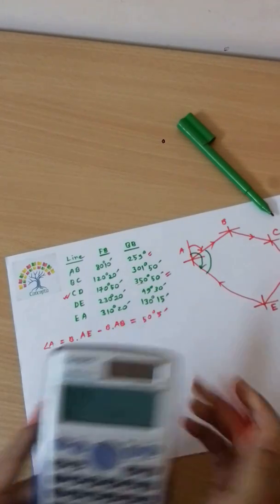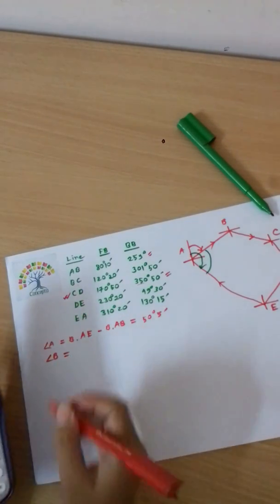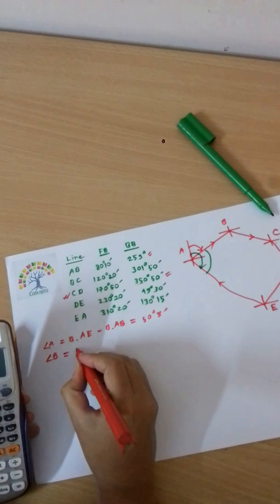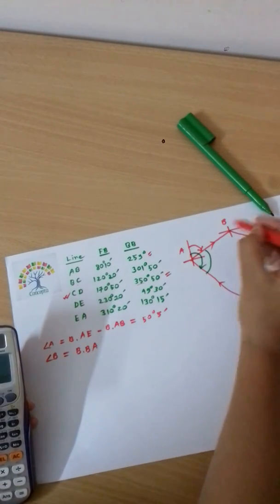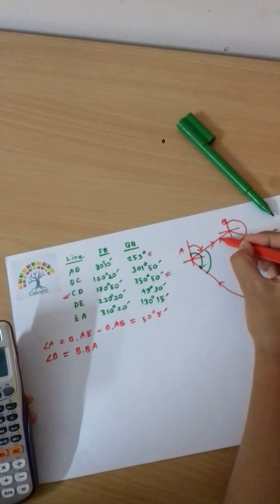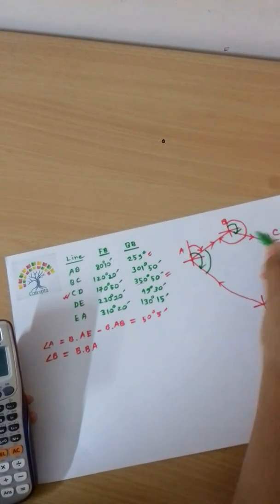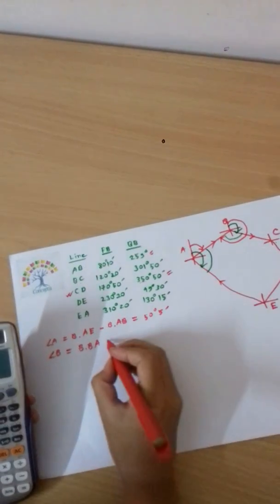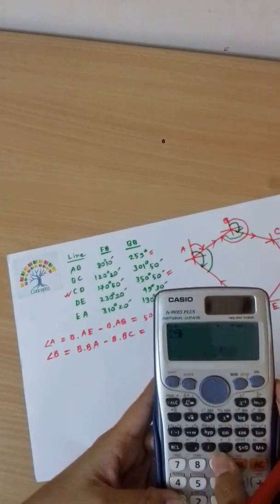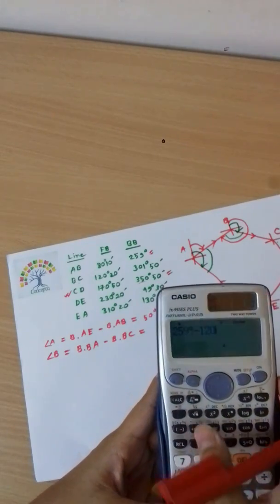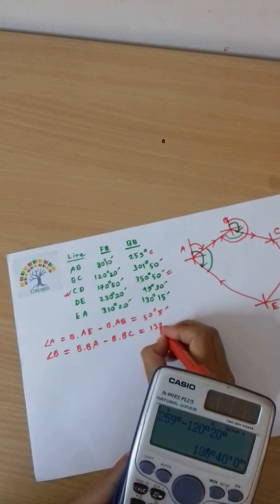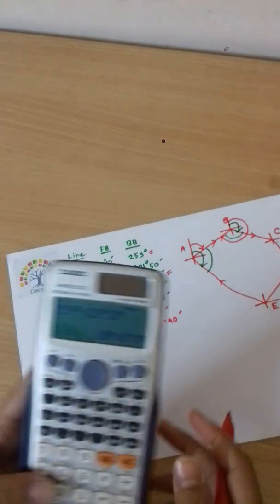Next, calculating angle B: bearing of BA minus bearing of BC. Bearing of BA is 259 degrees minus BC at 120 degrees 20 minutes, which gives us angle B equals 138 degrees 40 minutes.